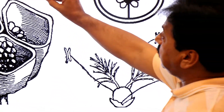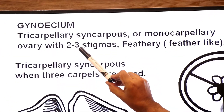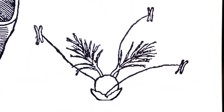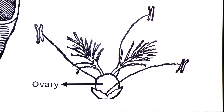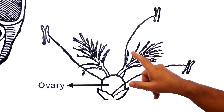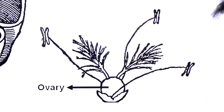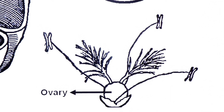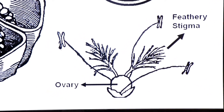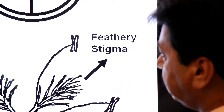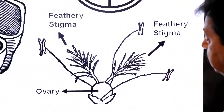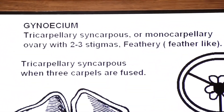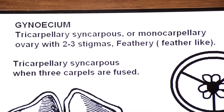The ovary has 2 to 3 stigmas. Here you can see stigma 1 and stigma 2 — two feathery, feather-like stigmas. So the ovary has 2 to 3 feathery stigmas.